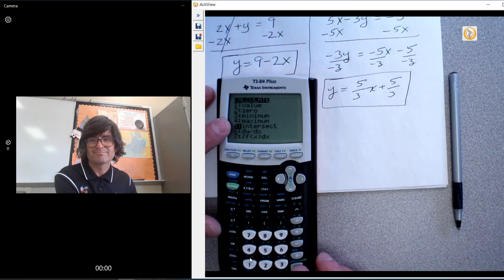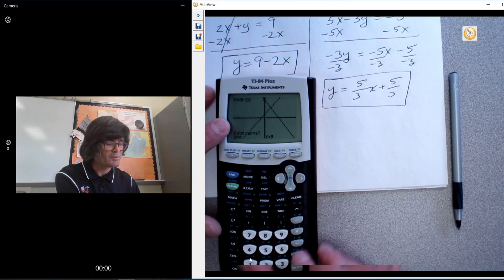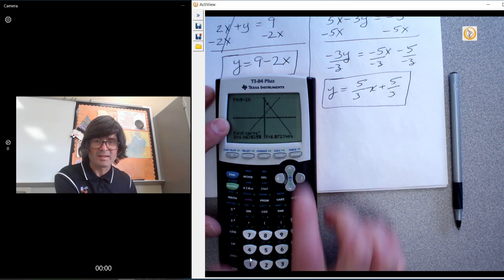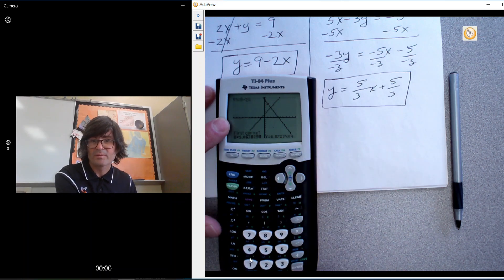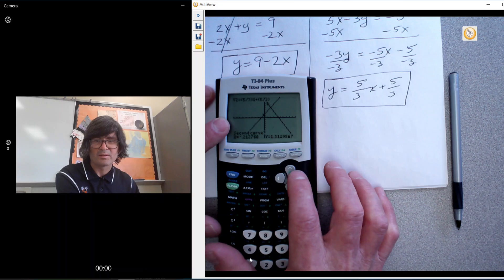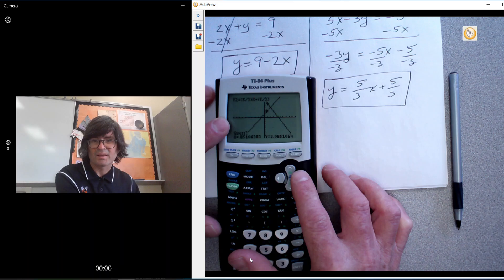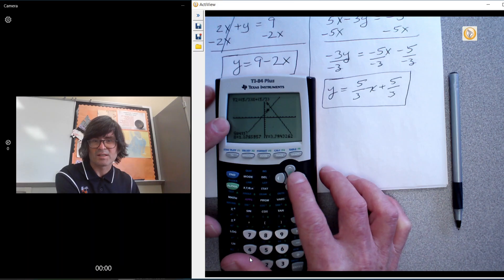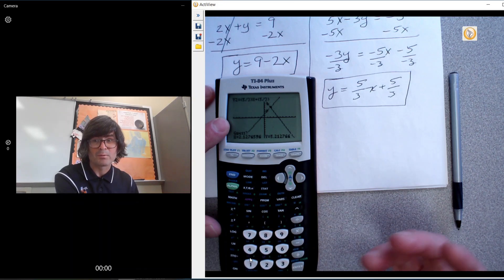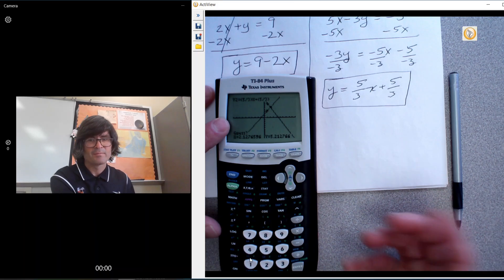Oops. Then it says, what's the first curve? You move your cursor with the arrow keys. You can see the cursor is on this line right here. I'm going to hit enter and say that's my first curve. Then what's the second curve? You can see your cursor moving around. That looks like my second curve. Hit enter. Then it says, guess where you think the intersection point is. This step allows the calculator to know ballpark where you think it should be. It helps the calculator find it more quickly. Hit enter. And 2 comma 5 is my solution.